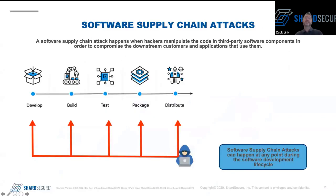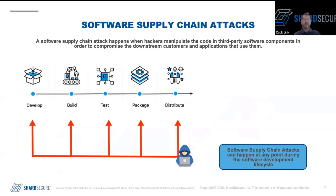So what is a software supply chain attack? In essence, it is another attack vector. Instead of phishing or exploiting a server vulnerability, the attacker embeds malware into legitimate software that you end up installing yourself. One thing that makes it such an attractive attack vector is not only the potential scope of the attack — potentially infecting hundreds of companies with a single attack — but also that people inherently trust commercial software.